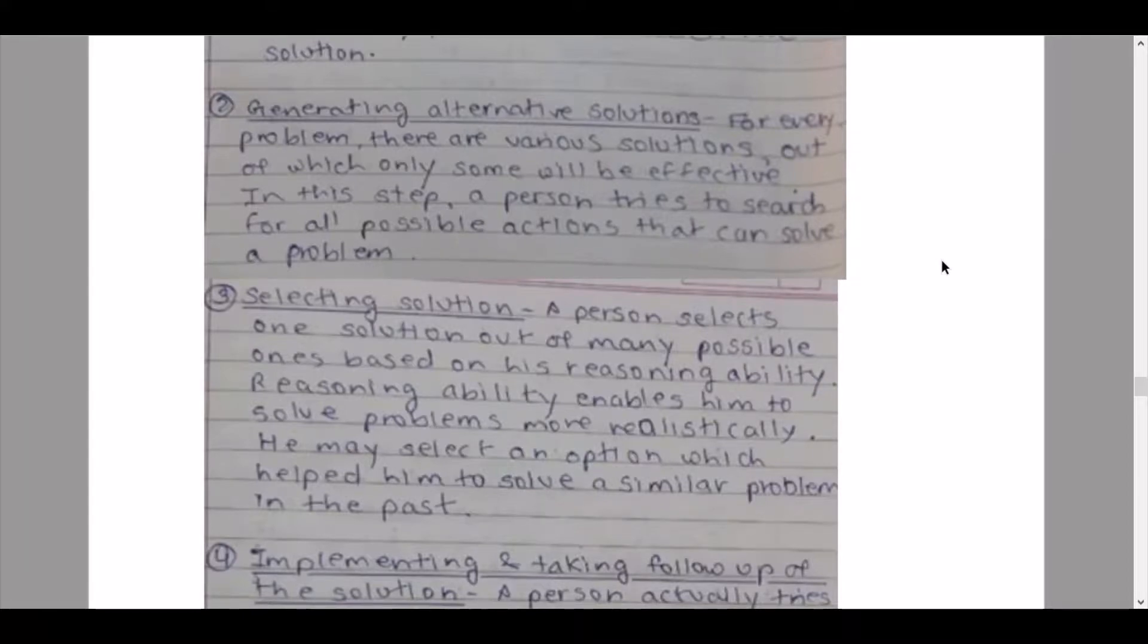Then we have our second pointer: generating alternative solutions. For every problem there are various solutions out of which only one will be effective. In this step, a person tries to search for all possible outcomes that can solve a problem. This is not very effective.